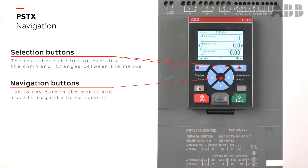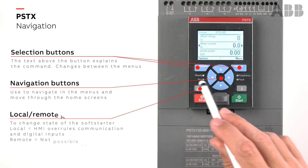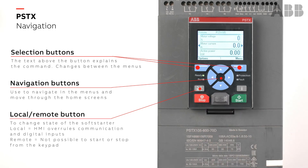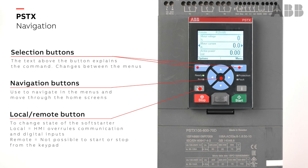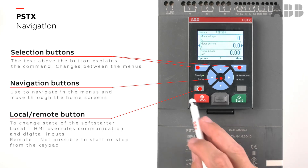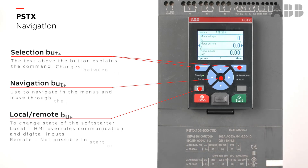Then we have the L and R button — the local and remote button — number three. As it sounds, it's either in local control, where you can use start and stop, or remote, where you have push buttons or communication.